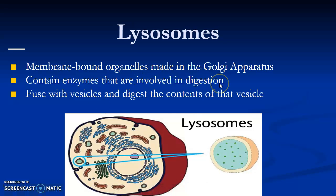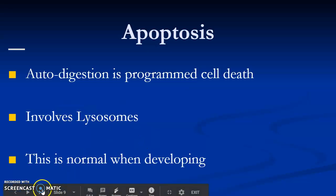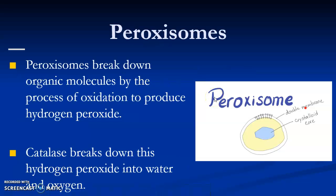Lysosomes are membrane-bound organelles made in the Golgi. They contain enzymes involved in digestion. The lysosome fuses with vesicles and digests their contents. For example, if a vesicle containing protein is brought into contact with the lysosome, the lysosome would digest that protein.